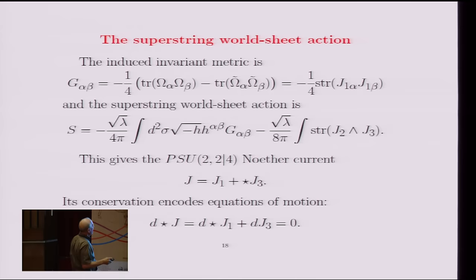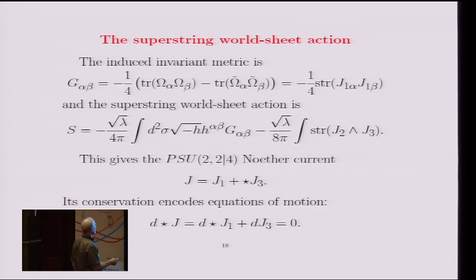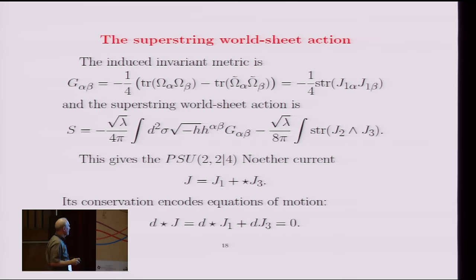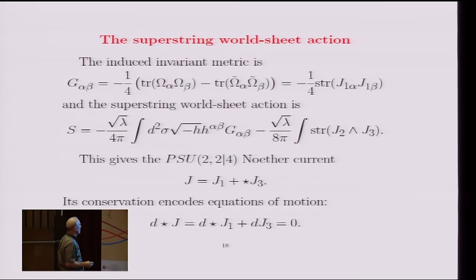And now, by making an infinitesimal PSU(2,2|4) transformation, you can read off the Noether current associated with this thing. And the Noether current turns out to be just J1 plus the Hodge dual of J3. So the J1 piece comes from this term, the J3 term comes from here. And so the conservation of this current gives you an equation of motion, which is shown here. So that's just the statement that this Noether current is conserved.